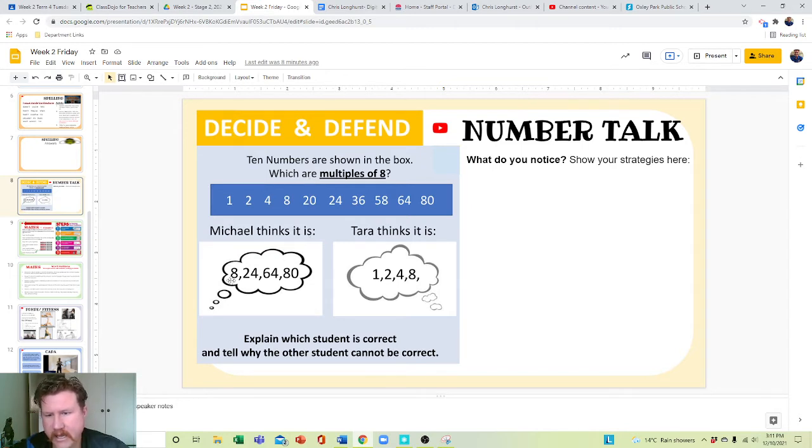Michael thinks it's 8, 24, 64, 80. Tara thinks it's 1, 2, 4, and 8.